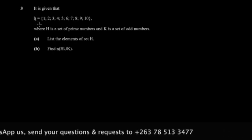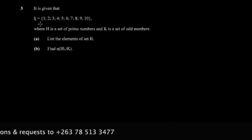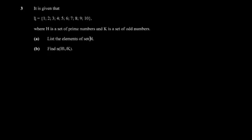The question states it is given that ξ = {1, 2, 3, 4, 5, 6, 7, 8, 9, 10}, where this symbol represents the universal set—all the elements we're dealing with in this question. H is a set of prime numbers and K is a set of odd numbers.